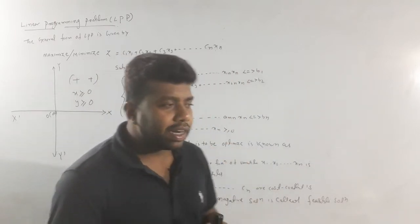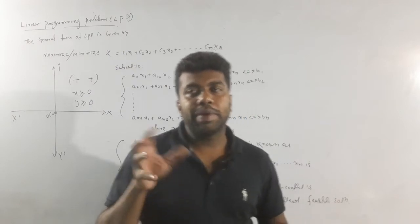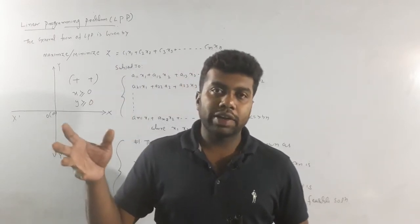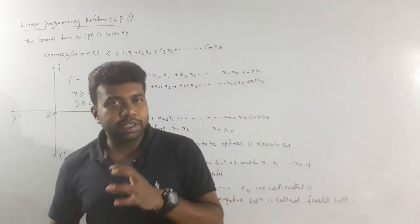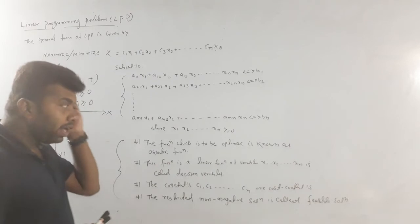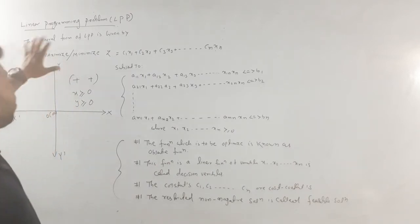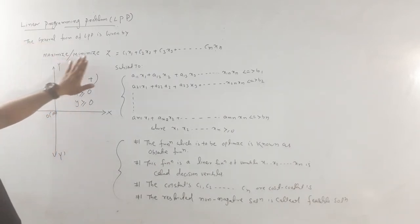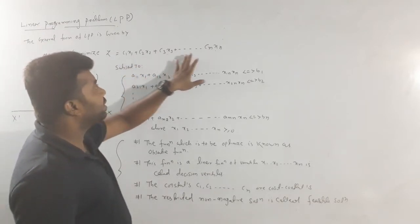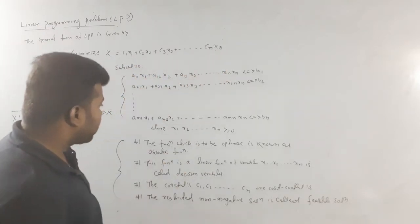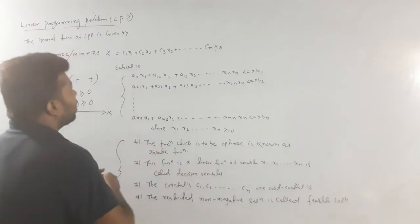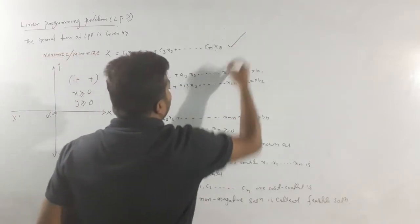In LPP we generally deal with profit and manufacturing problems. The main objective is to maximize profit. The general form is either maximize or minimize: c1·x1 + c2·x2 + c3·x3 + ... + cn·xn. This expression is known as the objective function.